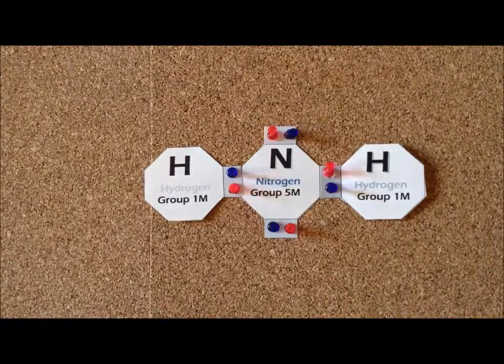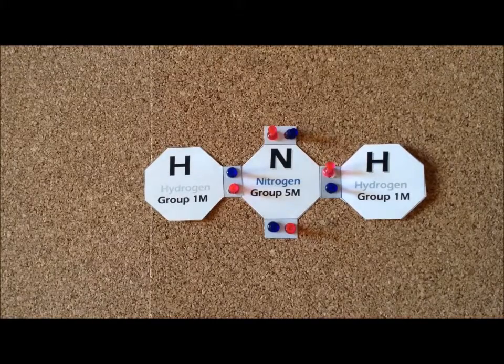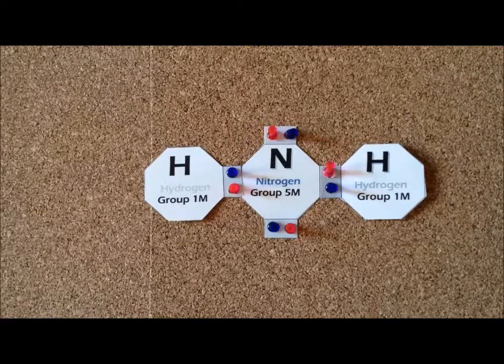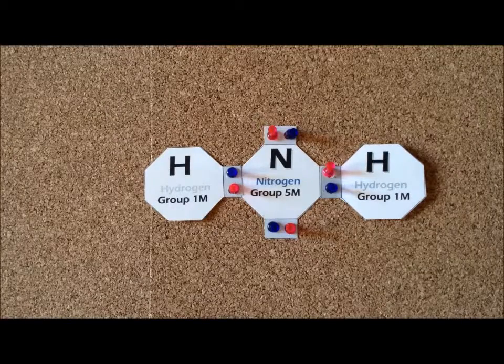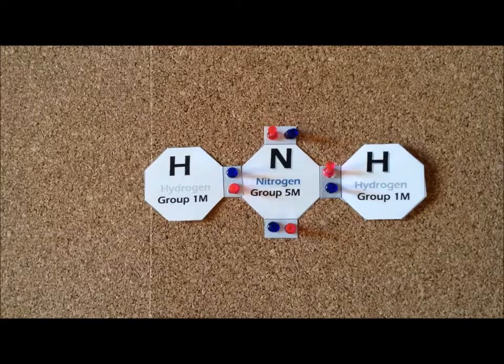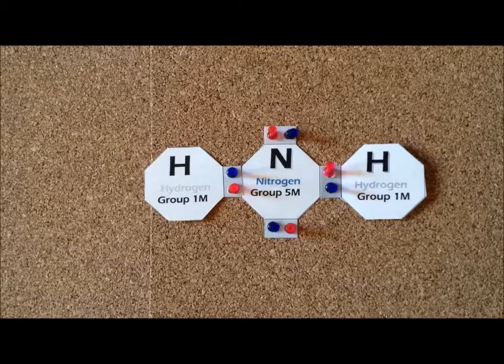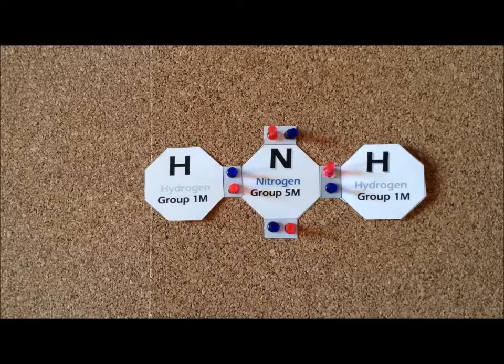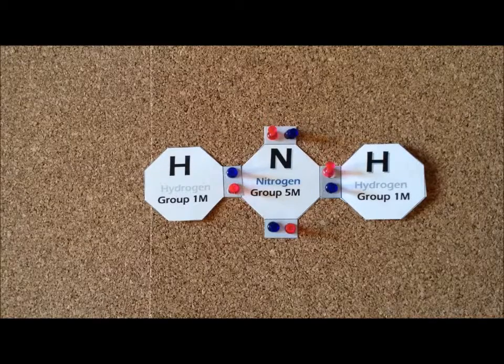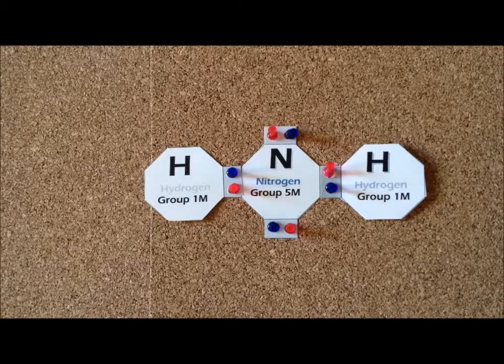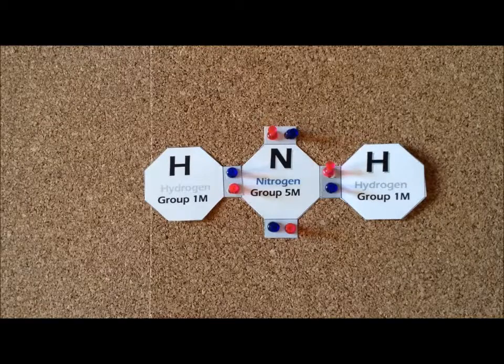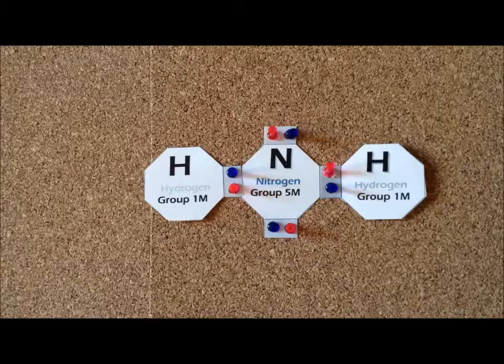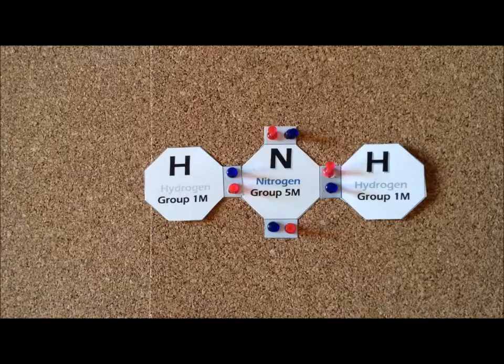Now, if we did not know that that was how amide ion was created, but we just wanted to create the Lewis structure for NH2 minus, we would reason as follows. Each nitrogen atom contributes five valence electrons, each hydrogen contributes one, so that gives us seven electrons. Since the overall ion has a minus one charge, that means we need to add one additional electron. So there must be eight electrons involved in the entire system.